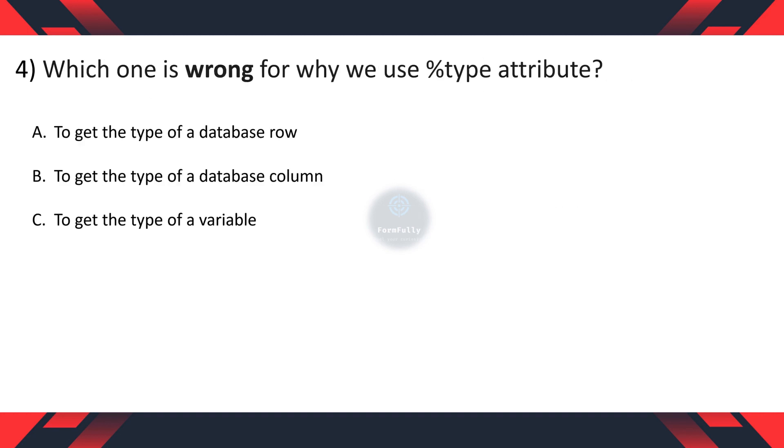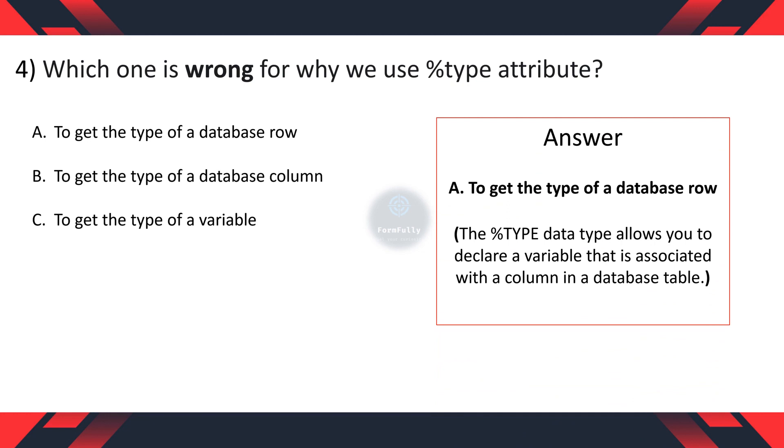Question 4: Which one is wrong for why we use percent type attribute? A: to get the type of a database row. B: to get the type of a database column. C: to get the type of a variable. The correct option is A: to get the type of a database row. This is wrong usage of percent type attribute. As the percent type data type allows you to declare a variable that is associated with the column in a database table.